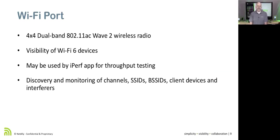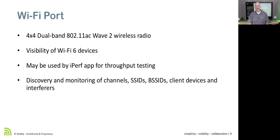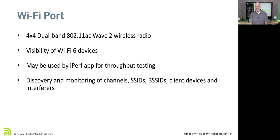The Wi-Fi port has a four-by-four dual-band 802.11 AC Wave 2 wireless radio, which also gives us visibility into Wi-Fi 6 devices. We can use this with iPerf for throughput testing — using iPerf with the NetAlly test accessory or a straight iPerf server, and combining both approaches for throughput testing. We can also do discovery and monitoring of SSIDs, BSSIDs, client devices, and interferers.